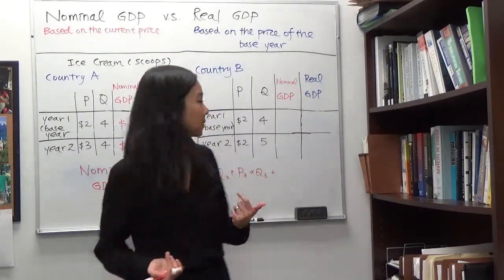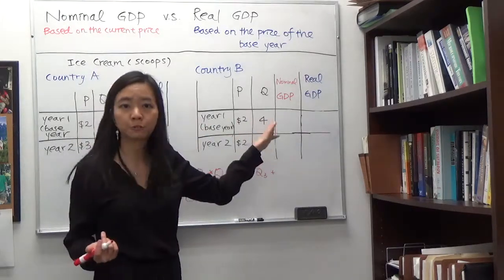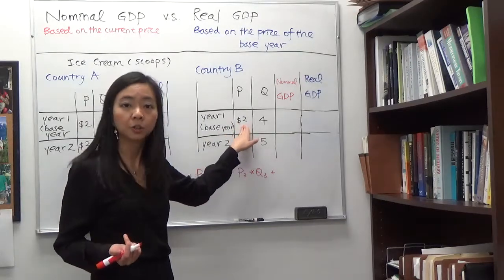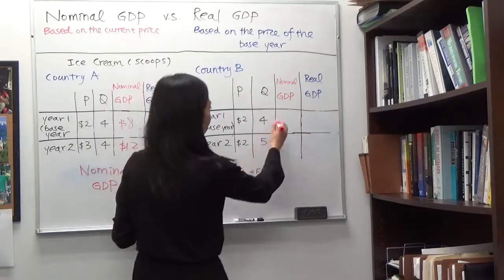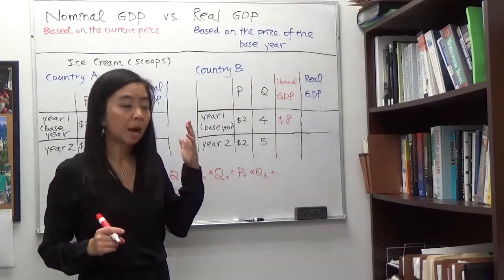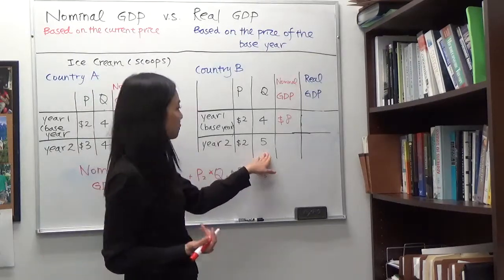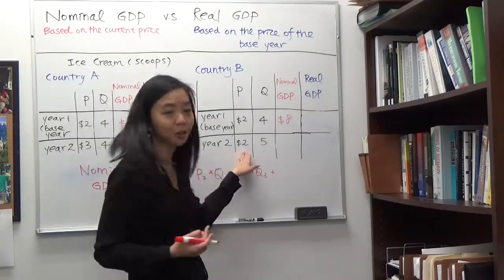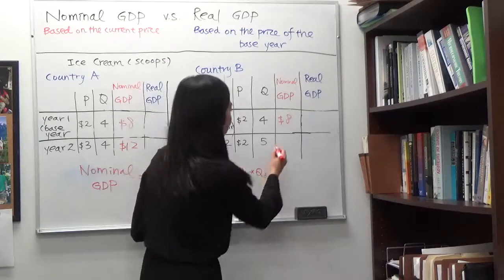Now let's look at country B. In year one, country B also produced four scoops of ice cream at two dollars each, so their nominal GDP is two times four, which gives you eight. In year two, they produce five scoops of ice cream and the price remains at two dollars, so their nominal GDP in year two is ten dollars.